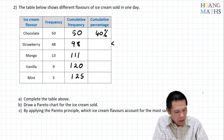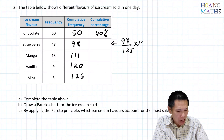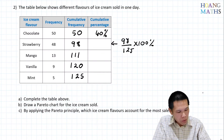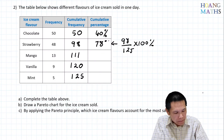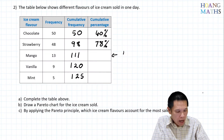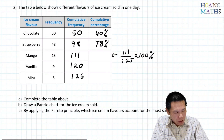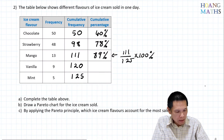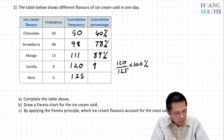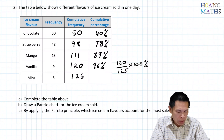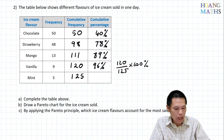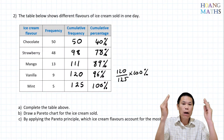Continuing the cumulative percentages: 98 divided by 125 times 100% gives 78%. Then 111 divided by 125 times 100% gives 89%. Next is 96%, and finally 125 divided by 125 times 100% gives 100%. Now we draw the Pareto chart for this data.